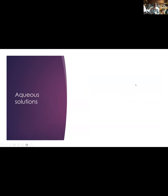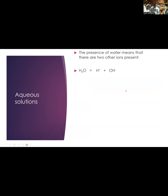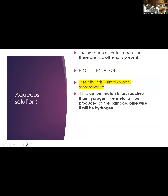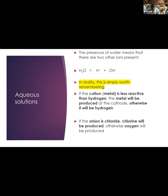So the electrolysis of water produces hydrogen and oxygen. Now, if there is water present - if I start with Na+Cl- in water, I also have H+ and OH-. So the ions which are present are H+, OH-, Na+, and Cl-. This is worth remembering: if we have an aqueous solution and we have a cation that's a metal which is lower in the reactivity series than hydrogen, then the metal will be produced. But if the cation is more reactive than hydrogen, we will get hydrogen. And if the anion is chloride, chlorine will be produced - but otherwise you will get oxygen.